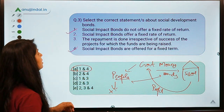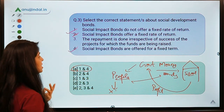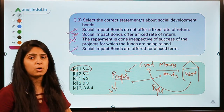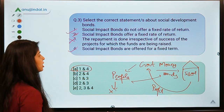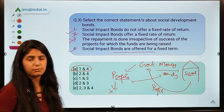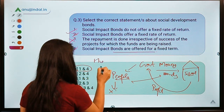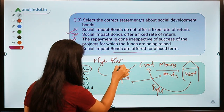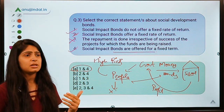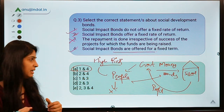Statement Two — that repayment is done irrespective of the success of the project — is incorrect. Repayment is done only if the venture is successful. Statement Four is correct: social impact bonds are offered for a fixed term, such as five or ten years, but repayment is not guaranteed. This makes them very high-risk securities — no fixed return, no guaranteed repayment — but it is a new method for governments to raise funding for projects with positive social impact.